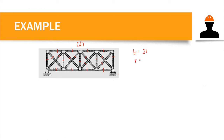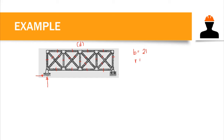The number of reactions: the hinged support gives 2 reactions, and each roller gives 1 reaction, for a total of 3 external reactions. Counting the joints, we have 10 joints.